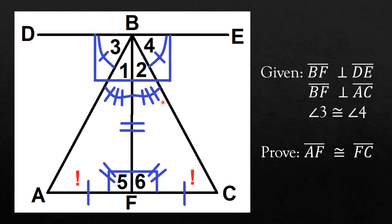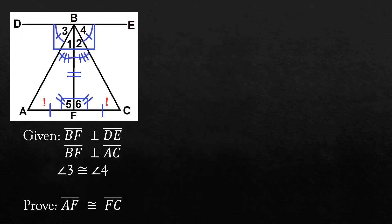We now have three corresponding parts of the two triangles that are congruent: angle, side, angle. And so, the two triangles are congruent by the ASA postulate. And by CPCTC, line segments AF and FC are congruent. We are now done with our plan using deductive reasoning. We may now start writing the two-column proof.